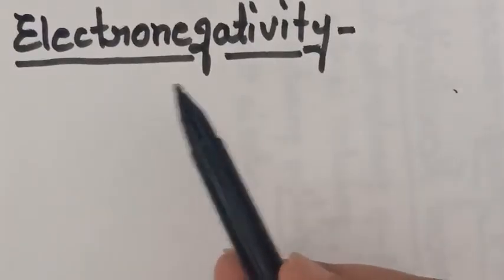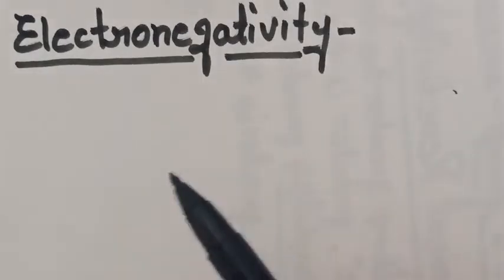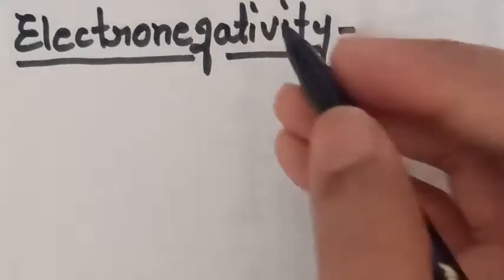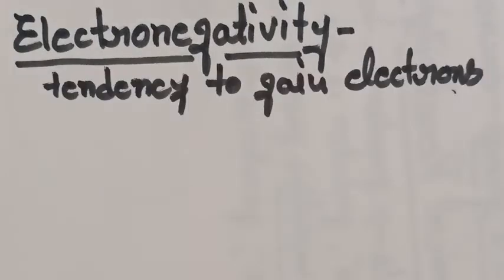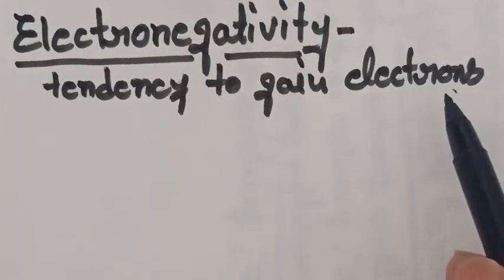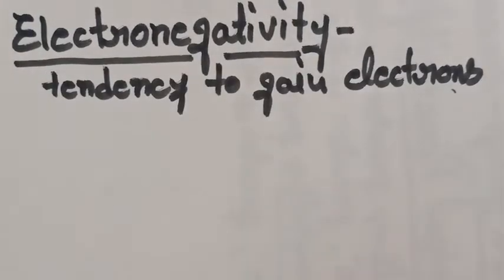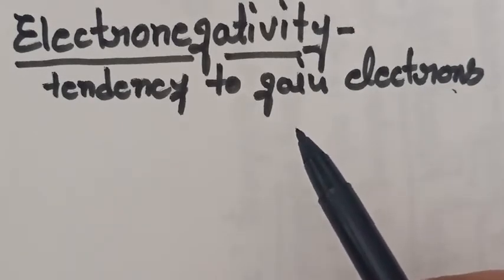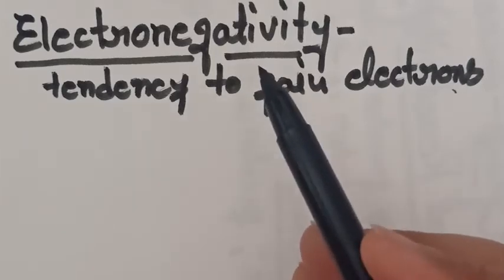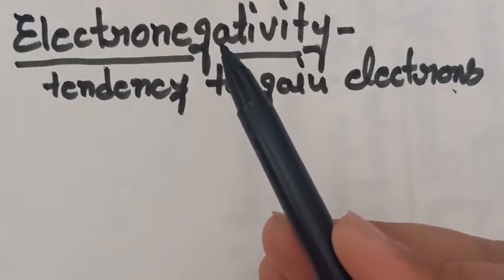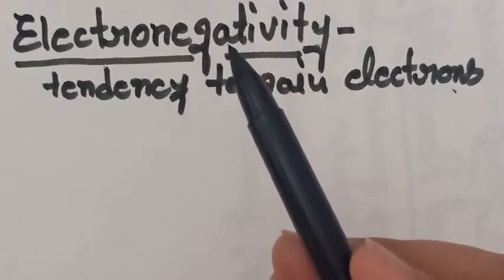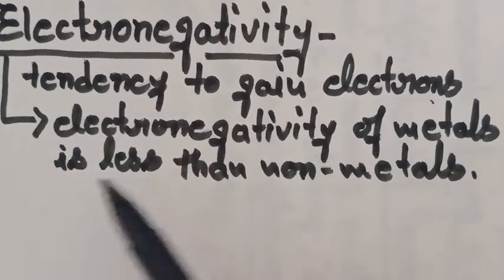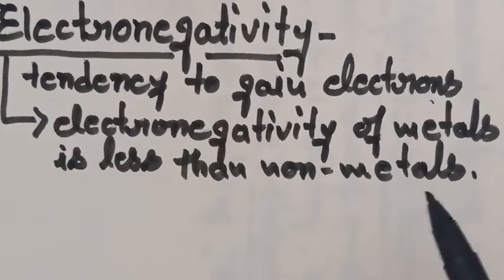Hello students. In this video I am going to start the explanation of electronegativity. What is electronegativity? It is a tendency to gain electrons. As we know, non-metals have a higher tendency to gain electrons compared to metals. That is why the electronegativity of metals is less than non-metals.